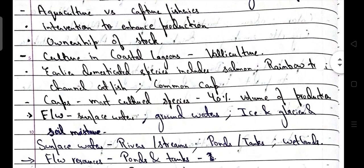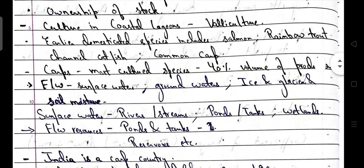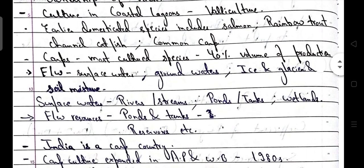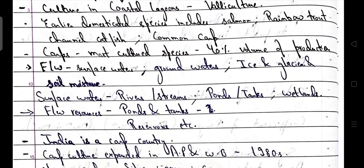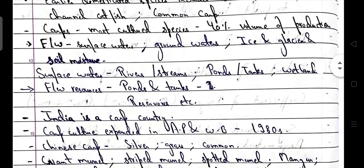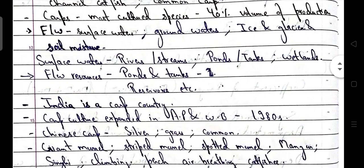First of all, aquaculture versus capture fisheries: aquaculture leads to intervention to enhance production as well as ownership of stock. Culture in coastal lagoon is known as valley culture. Earlier domesticated species include salmon, rainbow trout, channel catfish and common carp. Carps are the most cultured species, including 40% of the total volume of production.